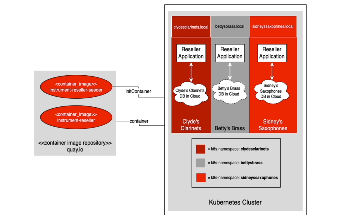The tenants all share the same code base, which is stored as container images in a Quay.io image repository. There are two images: one's called Instrument Reseller Seeder and the other one's called Instrument Reseller. Instrument Reseller Seeder runs as an init container under Kubernetes, and its job is to put in some seed data for each tenant. Each tenant will have data specific to its instrument type.